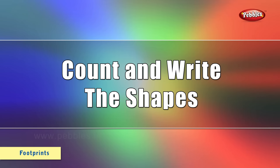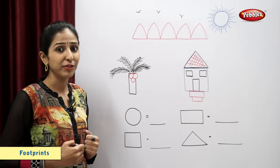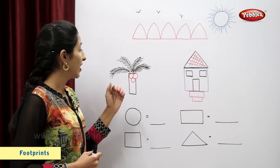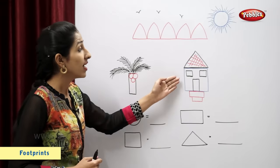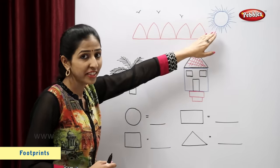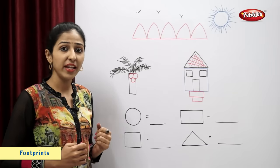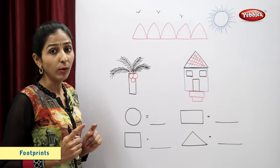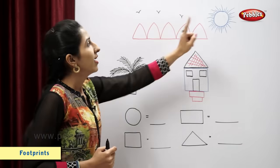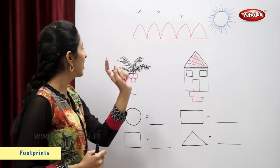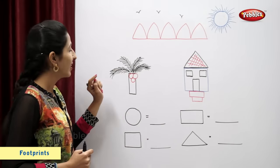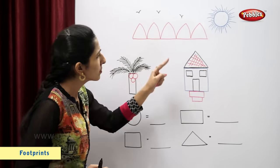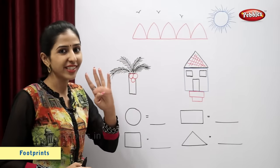Let's count and write the shapes. I have drawn a scenery. It has mountains, a coconut tree, a house and a sun. So now let's count and write the number of shapes. Circle. Let's count the number of circles: one, two, three, four. So there are four circles.